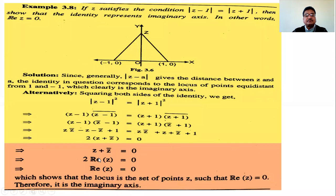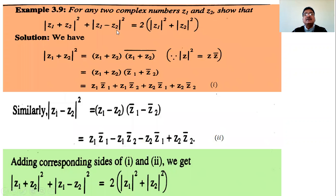Z + Z̄ = 2·Re(Z) because Z = x + iy and Z̄ = x - iy, so Z + Z̄ = 2x, meaning 2 times the real part. Therefore Re(Z) = 0, confirming the given identity represents the imaginary axis. Next example: for any two complex numbers z1 and z2, show that |z1 + z2|² + |z1 - z2|² = 2(|z1|² + |z2|²), called the parallelogram law.